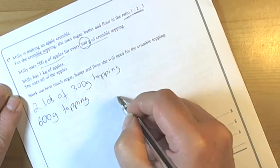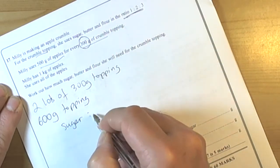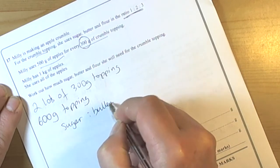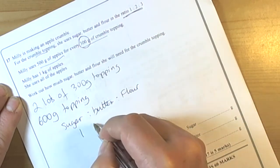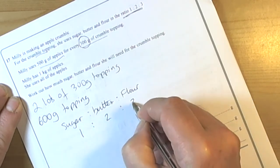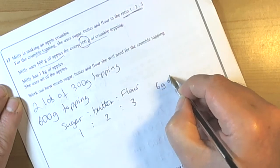But they're telling us that they're making this topping in this ratio, so sugar to butter to flour is in the ratio of 1 to 2 to 3. So if we add those up, that gives us 6. So for every 6 grams of topping,